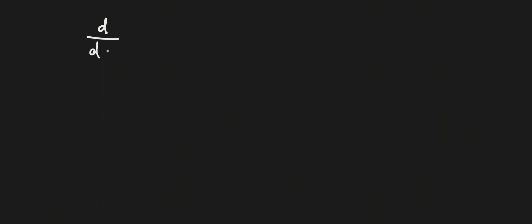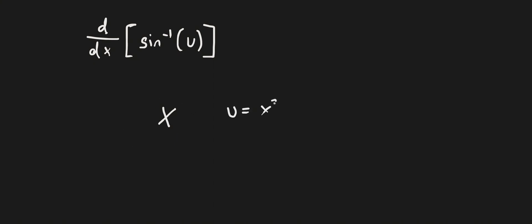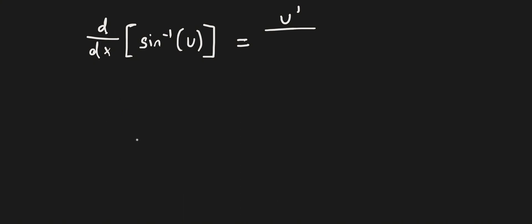Let's look at the derivative of inverse sine. Instead of x, I'm just going to write u. This is typically what's written because x is just x, but u can be something like x squared plus 2x plus 1. The derivative of sine inverse of u is going to be equal to u prime on top, and on the bottom you have the square root of 1 minus u squared.